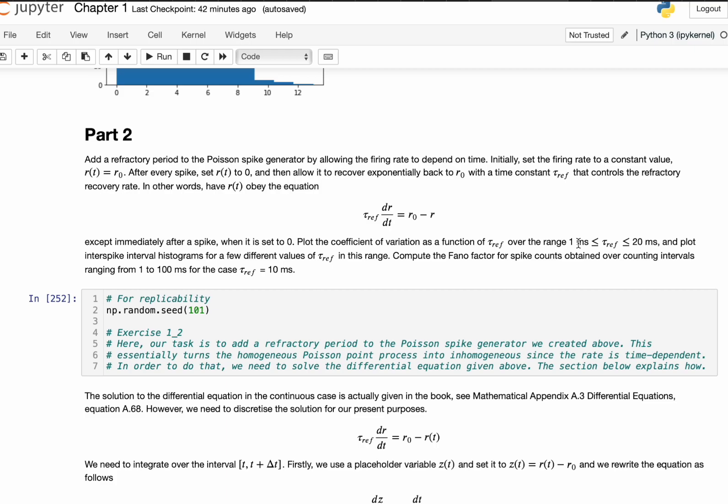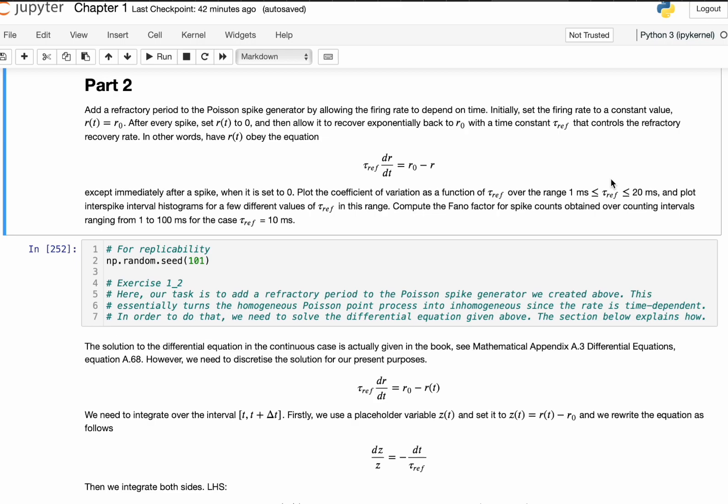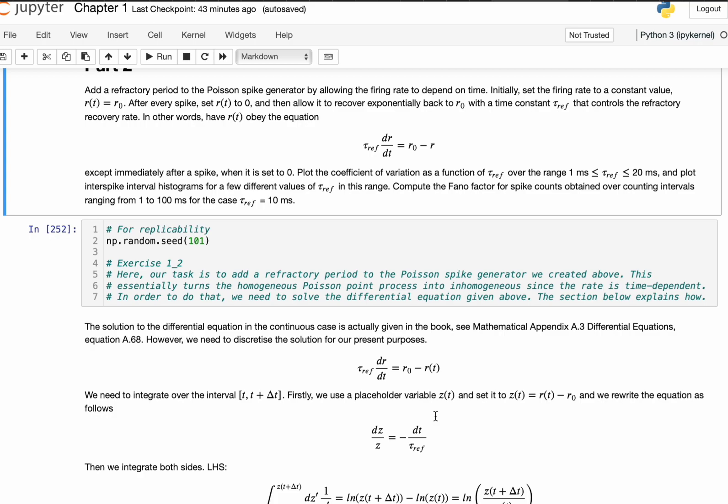Now, the exercise also suggests that we can try using a variety of these tau, so that will just depend how quickly it will change back to the steady state. So, the lower this value, so the closer to one millisecond, the steeper the exponential relaxation will be towards the steady state.